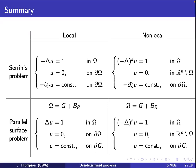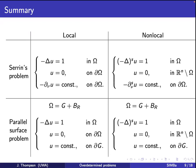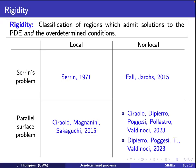Now we want to talk about the rigidity of these problems. What regions omega satisfy these equations? Given a solution exists, what can we say about omega? The answer is: in all four cases, omega has to be a ball. The top-left corner was Serrin's original result, and over the years all the other cases have been filled in.